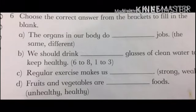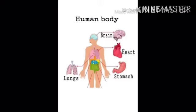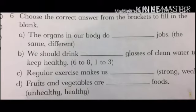Question number 6: choose the correct answer from the brackets to fill in the blank. Part A: the organs in our body do dash jobs. The options are 'the same' and 'different'. The body parts do different work, so the correct option is 'different'. Write different in the blank.